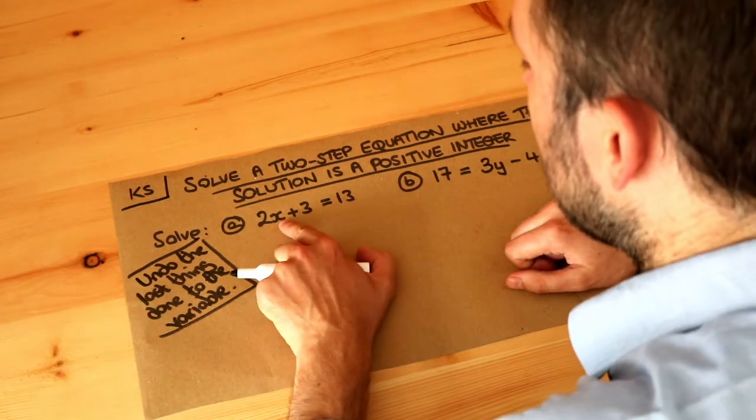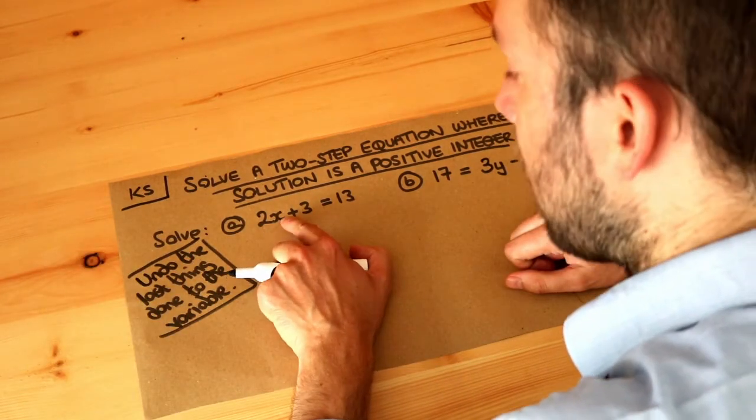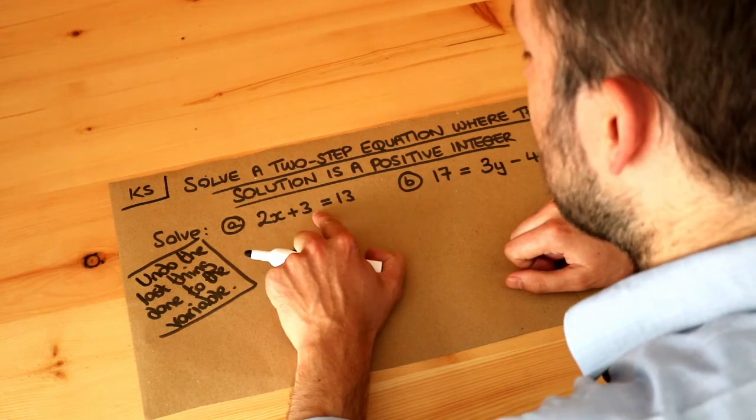So let's think about what's happening to x here. It was multiplied by 2, because 2x means x multiplied by 2. Then we added 3.